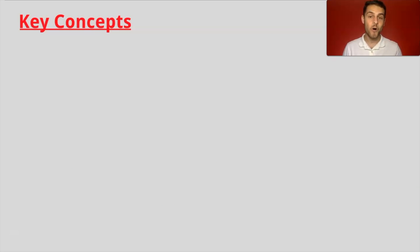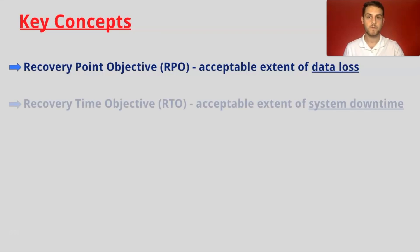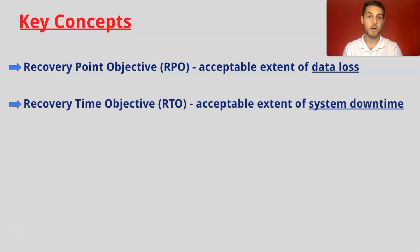Now let's bring together all of the key concepts. Recovery point objective, also known as RPO, is the acceptable extent of data loss. Recovery time objective, also known as RTO, is the acceptable extent of system downtime. One helpful tip to remember the definition of RTO is that the word 'time' is included in both the term and its definition.